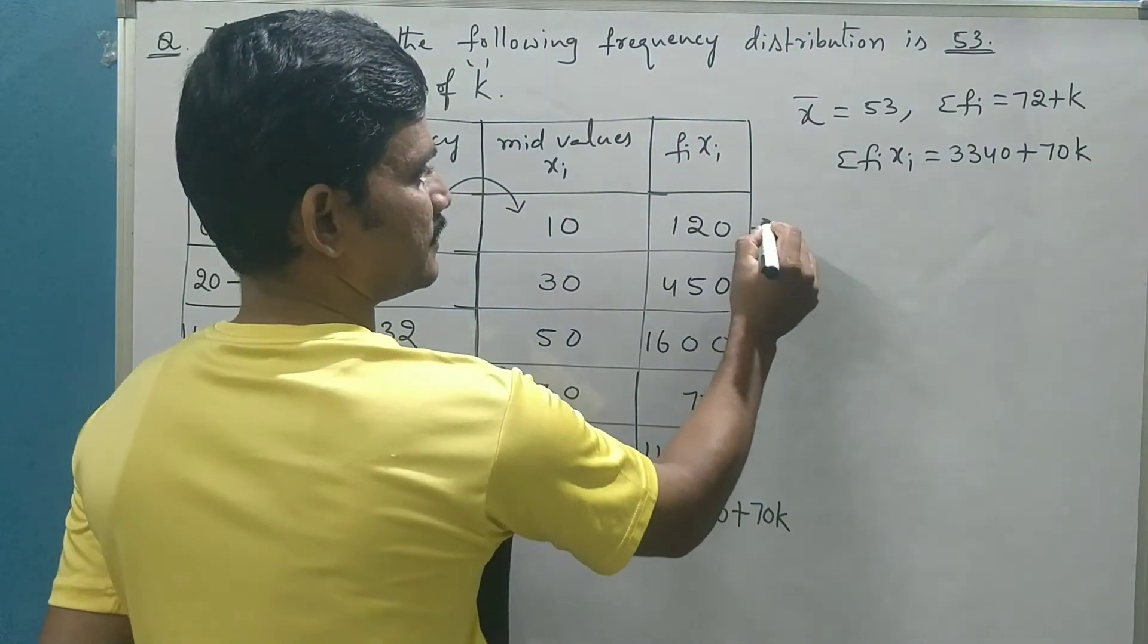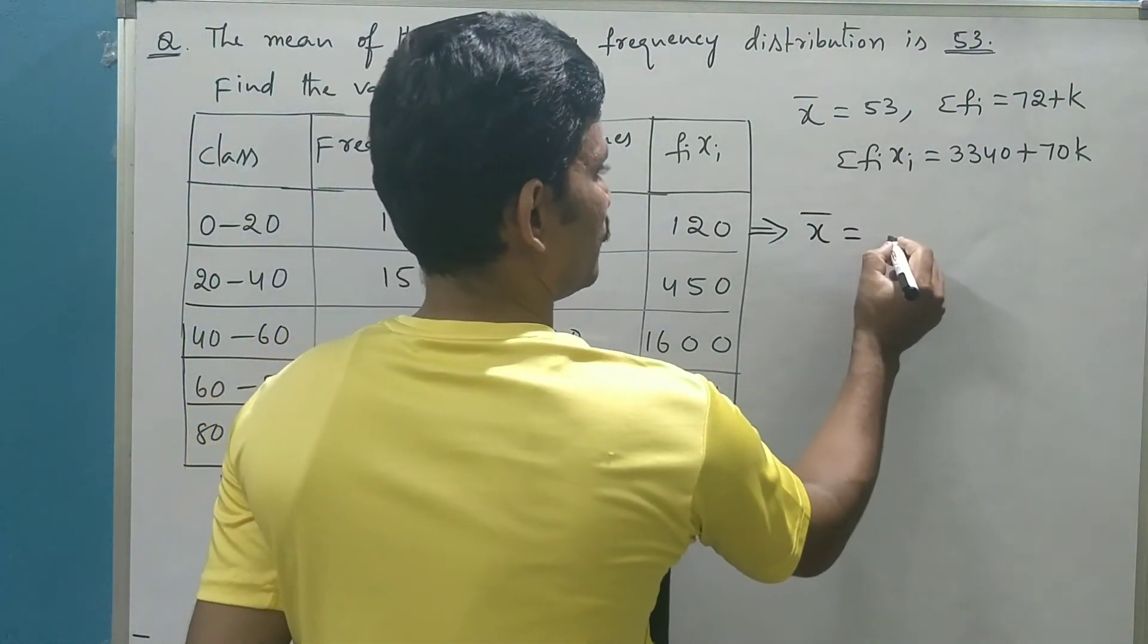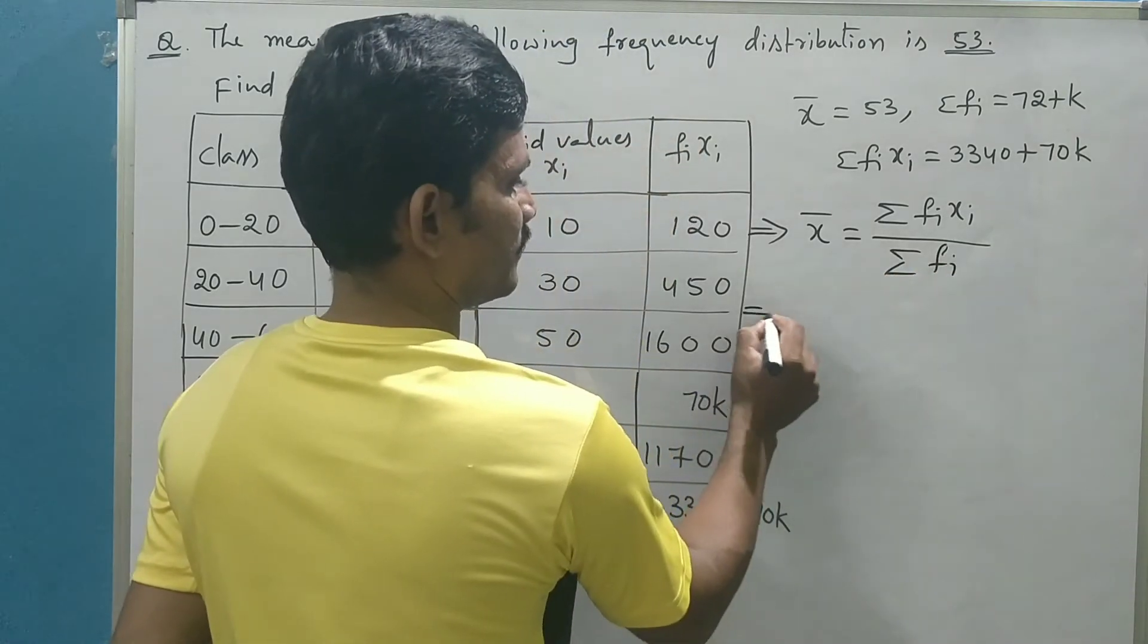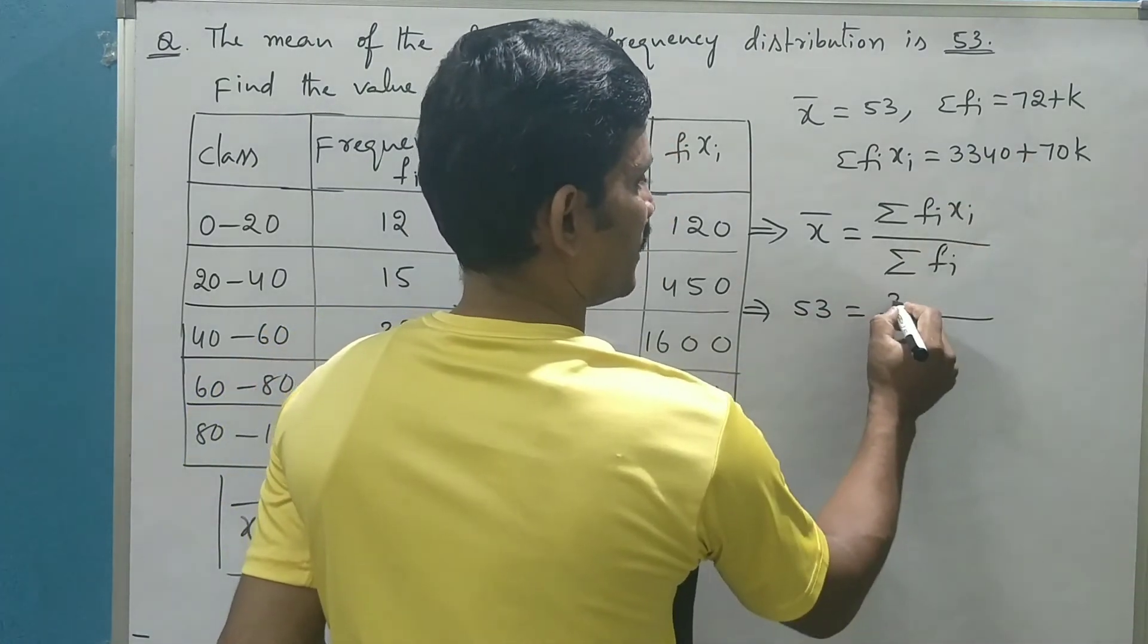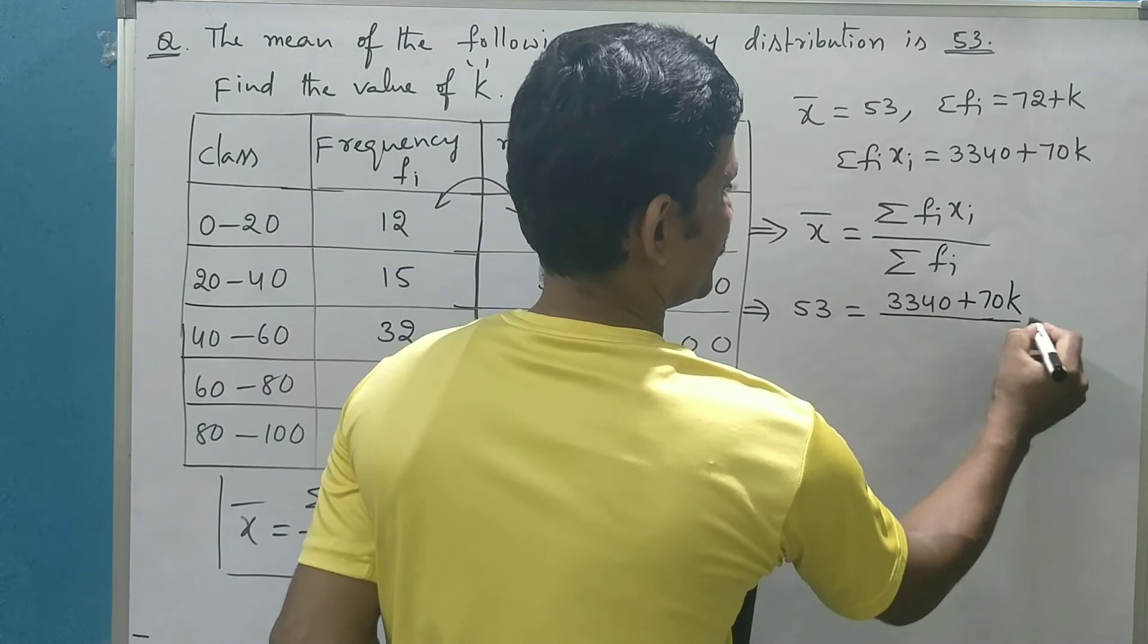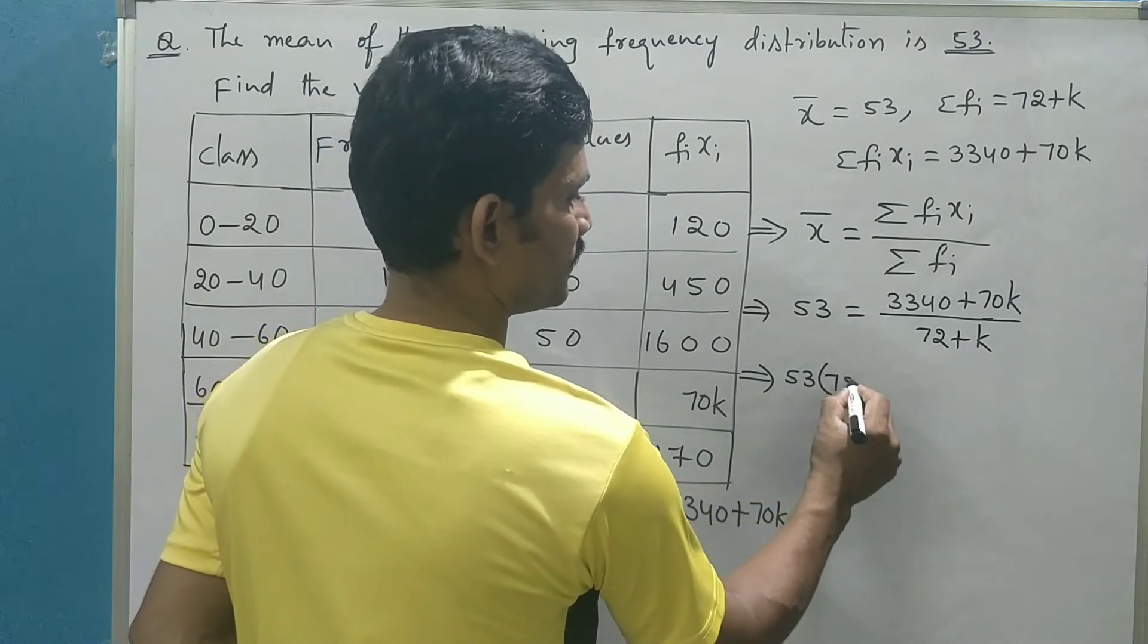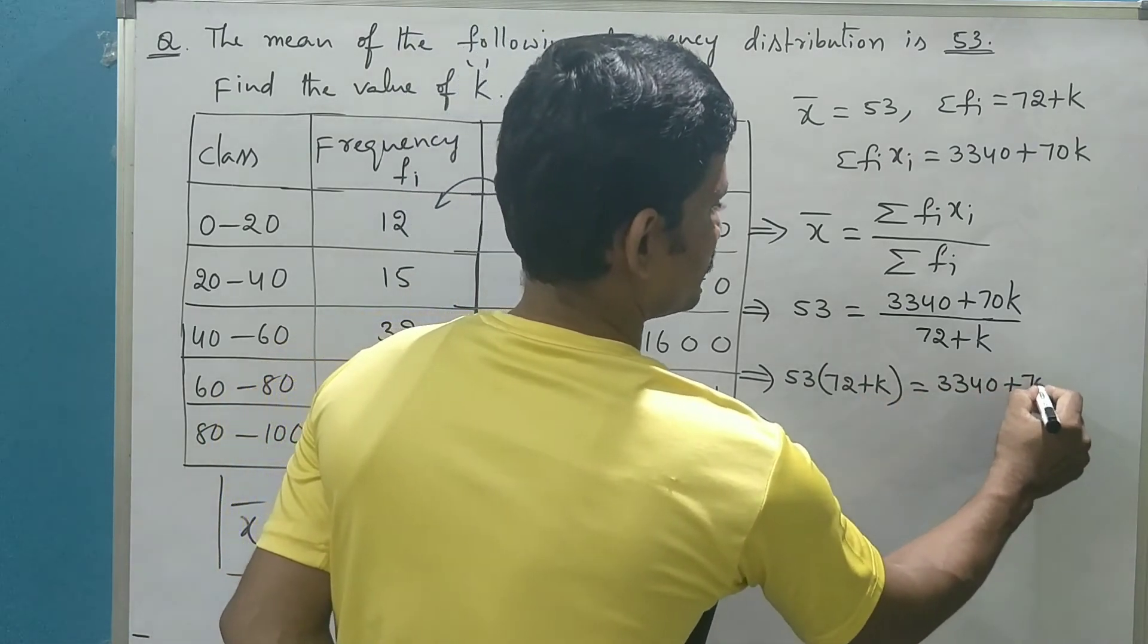Now the final step is to substitute in the formula. Mean x̄ is equal to Σfixi by Σfi. Mean is 53 is equal to Σfixi is 3340 plus 70k over 72 plus k. Do cross multiplication. 53 into 72 plus k is equal to 3340 plus 70k.